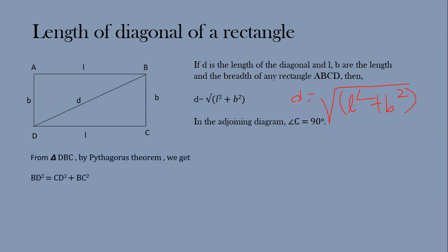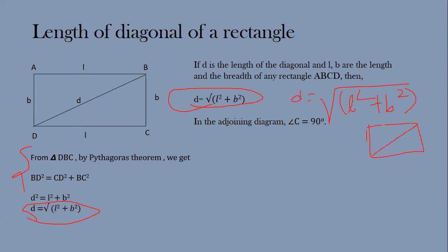Now let's derive where this formula comes from. Using the Pythagorean theorem — which is a right-angle triangle property stating that the hypotenuse is the longest side — we can find it using: hypotenuse² = altitude² + base². So BD² (the hypotenuse squared) equals b² + l². Therefore d² = l² + b², and d = √(l² + b²). This is the formula and the proper derivation.